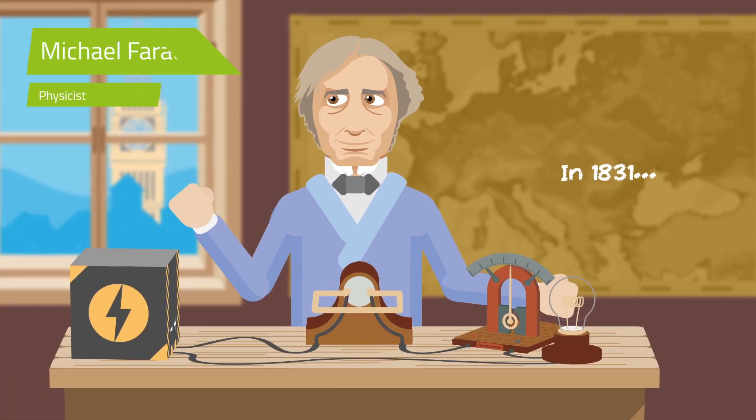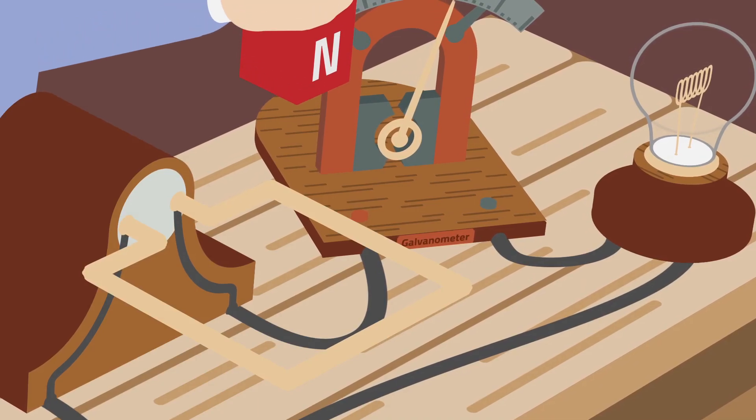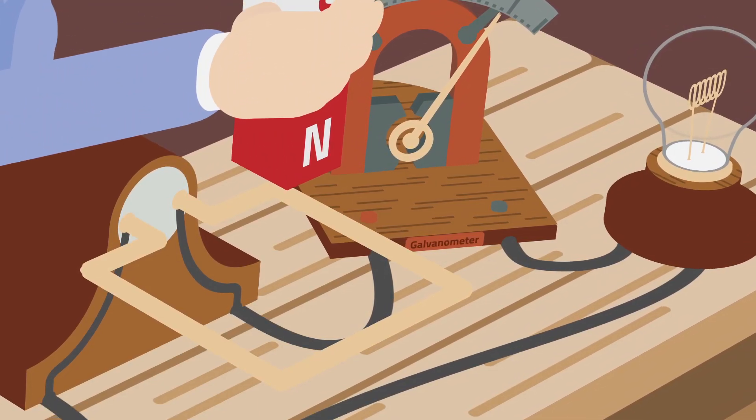The physicist Michael Faraday wondered if the opposite could also work. Can a moving magnet also exert a force on a current or on a current-carrying conductor?